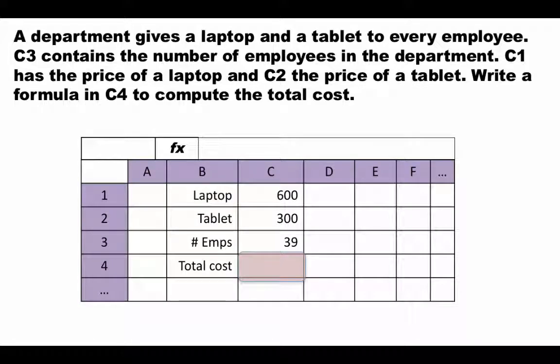Now let's look at where operator precedence plays a role in Excel. A department gives a laptop and a tablet to every employee. Cell C3 has the number of employees (39), C1 has the price of a laptop, and C2 has the price of a tablet. In cell C4, we want a formula to compute the total cost for the department — every employee gets a laptop and a tablet. Pause the video and write your answer.